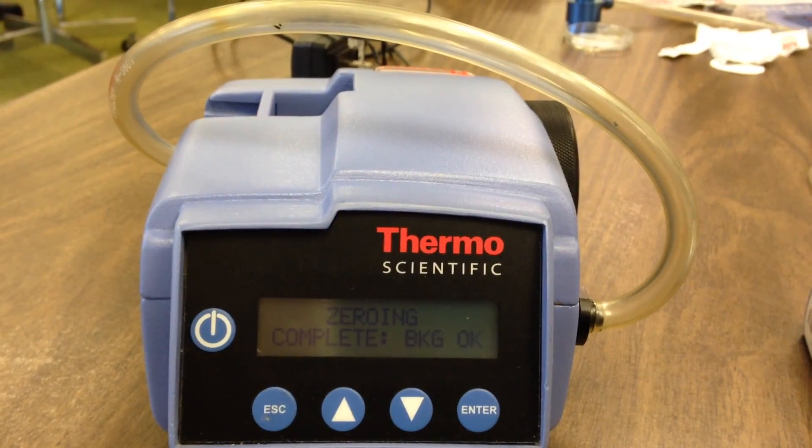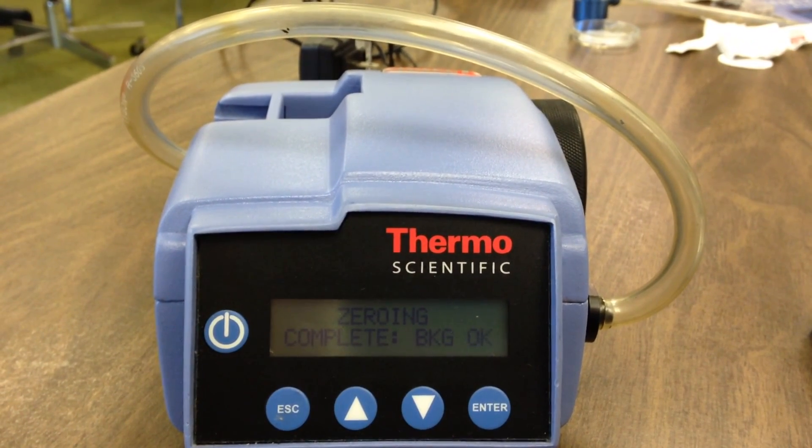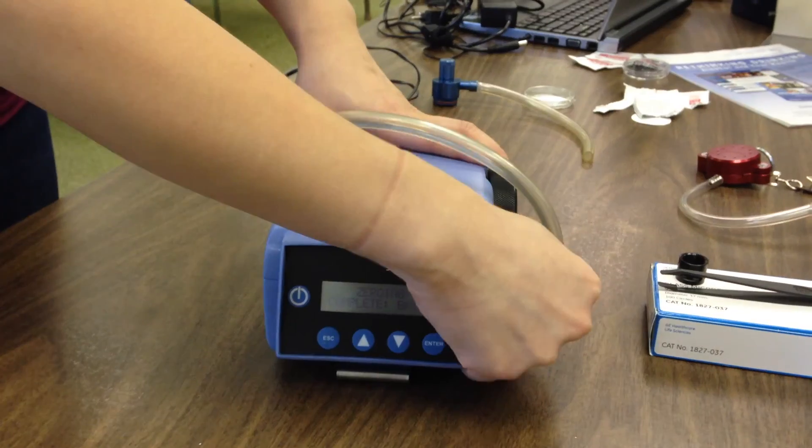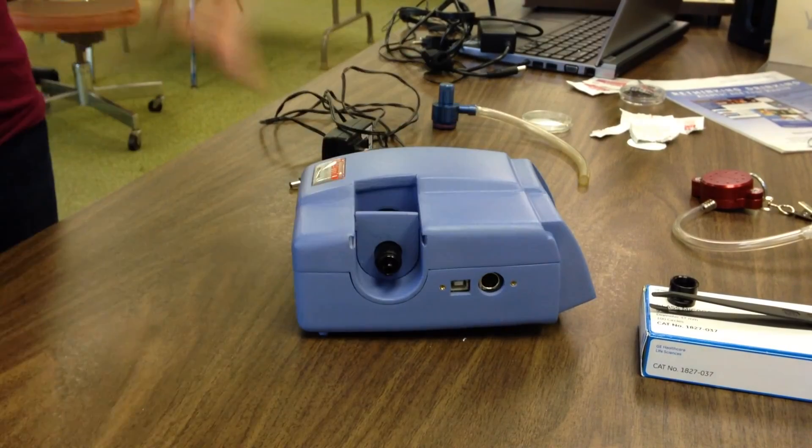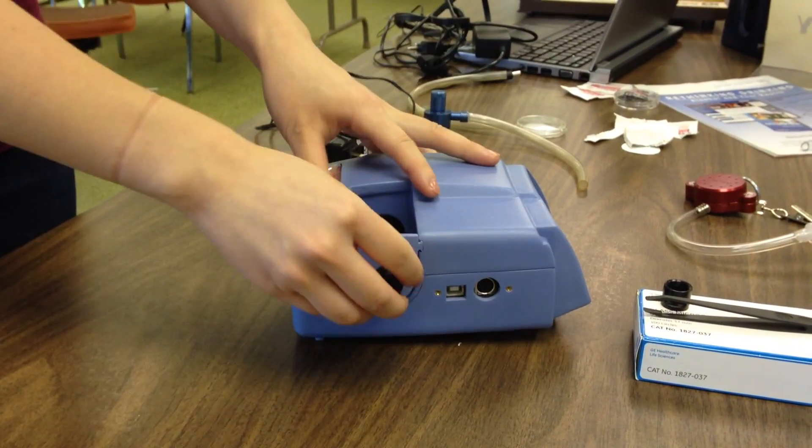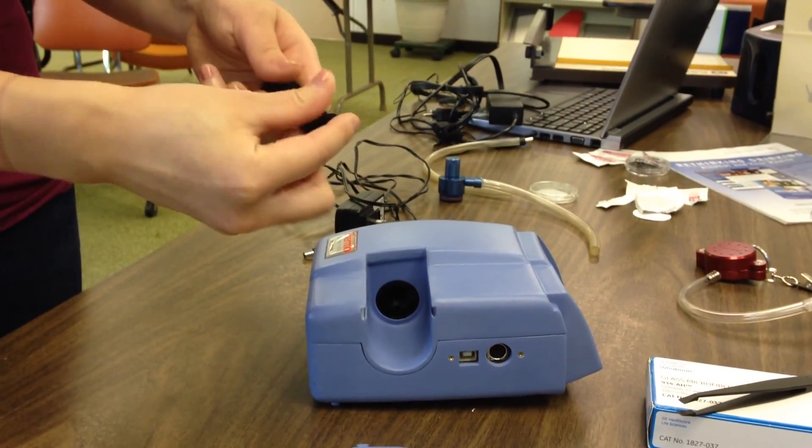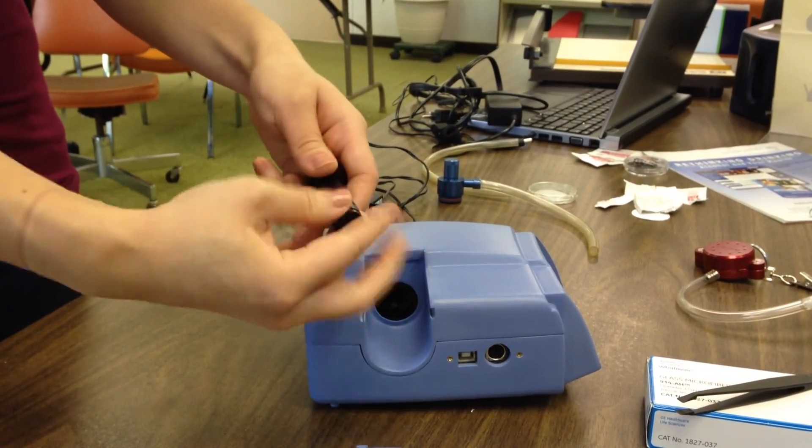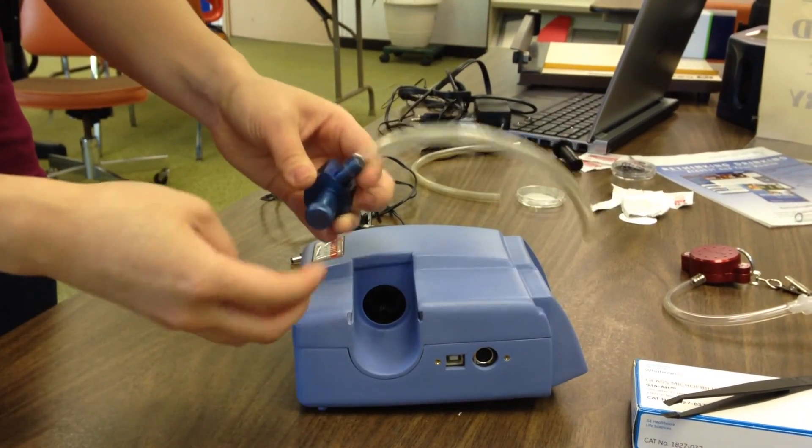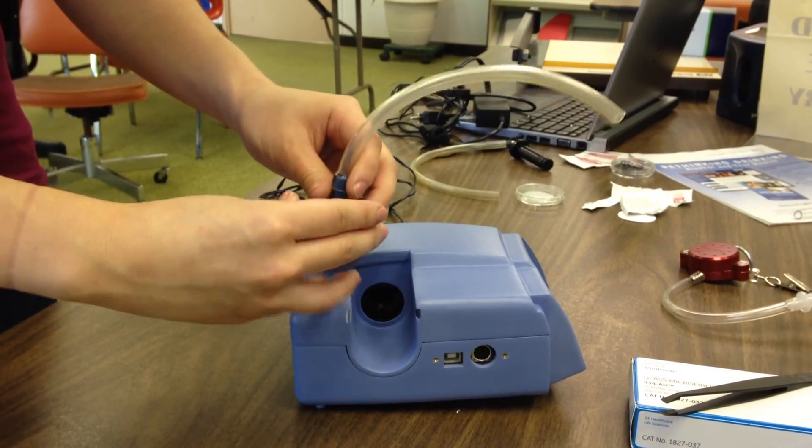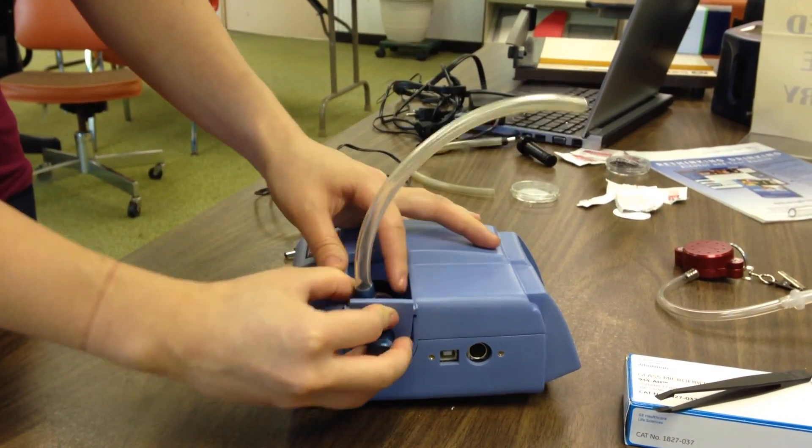If the measurement was successful, the screen will show that zeroing is complete. After zeroing is complete, remove your tubing, then take out the total inlet from the side of the PDR and replace it with the blue cyclone to begin sampling. Make sure that the tubing is secure and unobstructed.